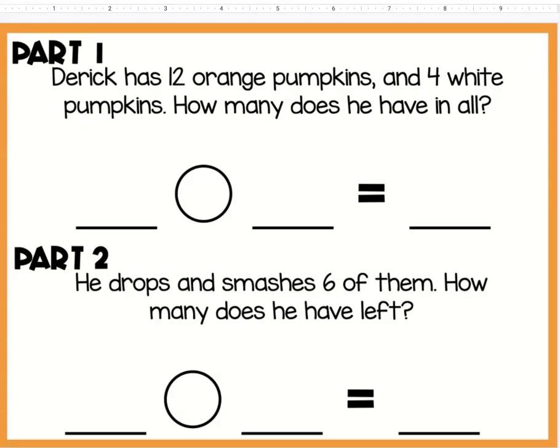All right boys and girls, today we're going to talk about solving two-step word problems. In this one, the first part says Derek has 12 orange pumpkins and 4 white pumpkins. How many pumpkins does he have in all?